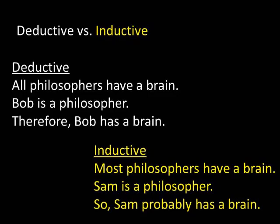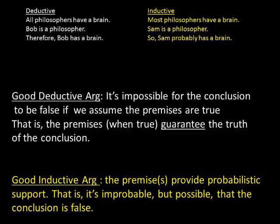If you look at the two arguments on the screen, can you identify the different ways the premises support the conclusion in each argument? This distinction between deduction and induction describes how the premises support the conclusion. In deductive arguments, the truth of the premises guarantees the conclusion — it's impossible for the conclusion to be false if we assume the premises are true. In inductive arguments, the premises provide probabilistic support, so it's improbable but possible that the conclusion is false.